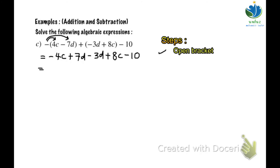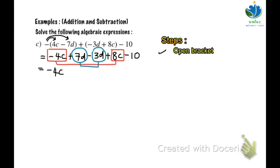Step number two, arrange the like terms. Now negative 4c and 8c. Second, 7d and 3d. The constant 10 has no pair, so it stays alone. Now we have negative 4c plus 8c plus 7d minus 3d minus 10.